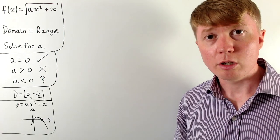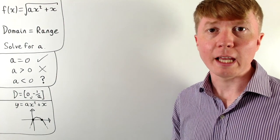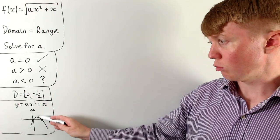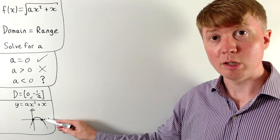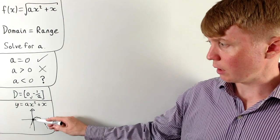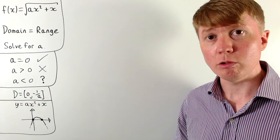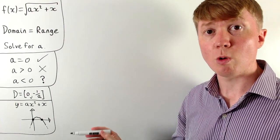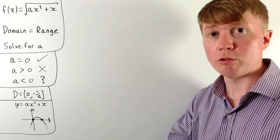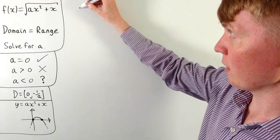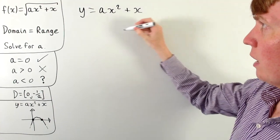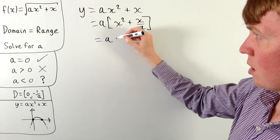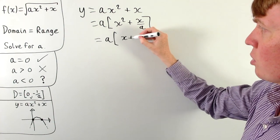Now we'll find the range so we can set domain equal to range and solve for a. Because of the domain, we're only interested in values where the quadratic is positive. The range of the quadratic goes from zero up to its maximum point, and the range of our square root function goes from zero up to the square root of that maximum. To find the maximum, we use completing the square on y = ax² + x, first taking out the factor of a to get a(x² + x/a).